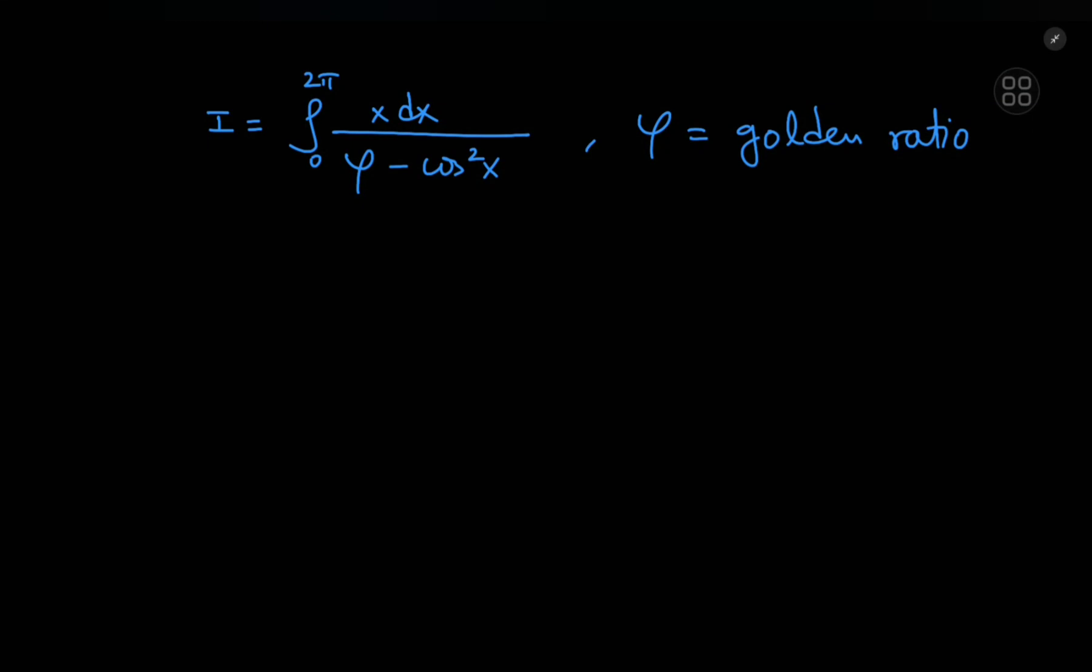Today we have this gorgeous looking integral here that's going to evaluate to an aesthetically pleasing result with a really cool solution development. It's the integral from 0 to 2π of x dx divided by φ minus the squared cosine of x, where φ is of course the golden ratio.